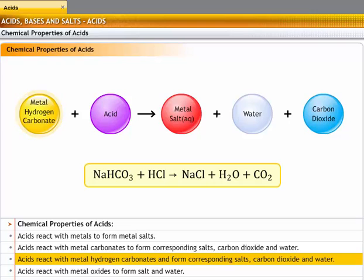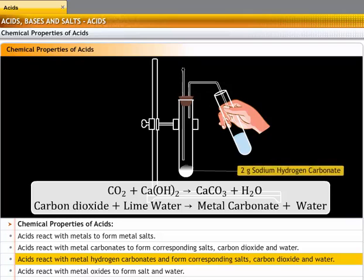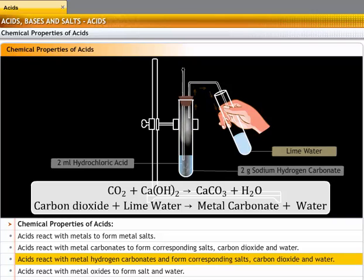Acids react with metal hydrogen carbonates and form corresponding salts, carbon dioxide, and water. Take 2 grams of sodium hydrogen carbonate in a test tube. Pour 2 ml of hydrochloric acid into the test tube. You will see that a gas evolves. Pass this gas through freshly prepared lime water. The lime water turns milky, indicating that the gas evolved is carbon dioxide. A white precipitate of calcium carbonate is also formed.